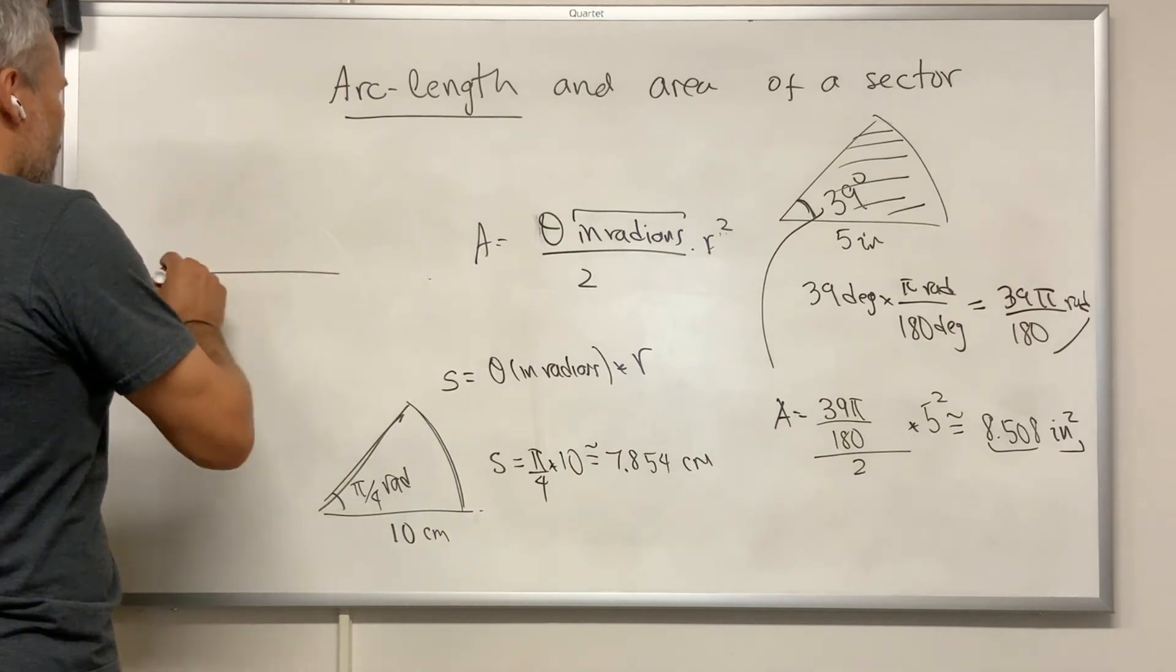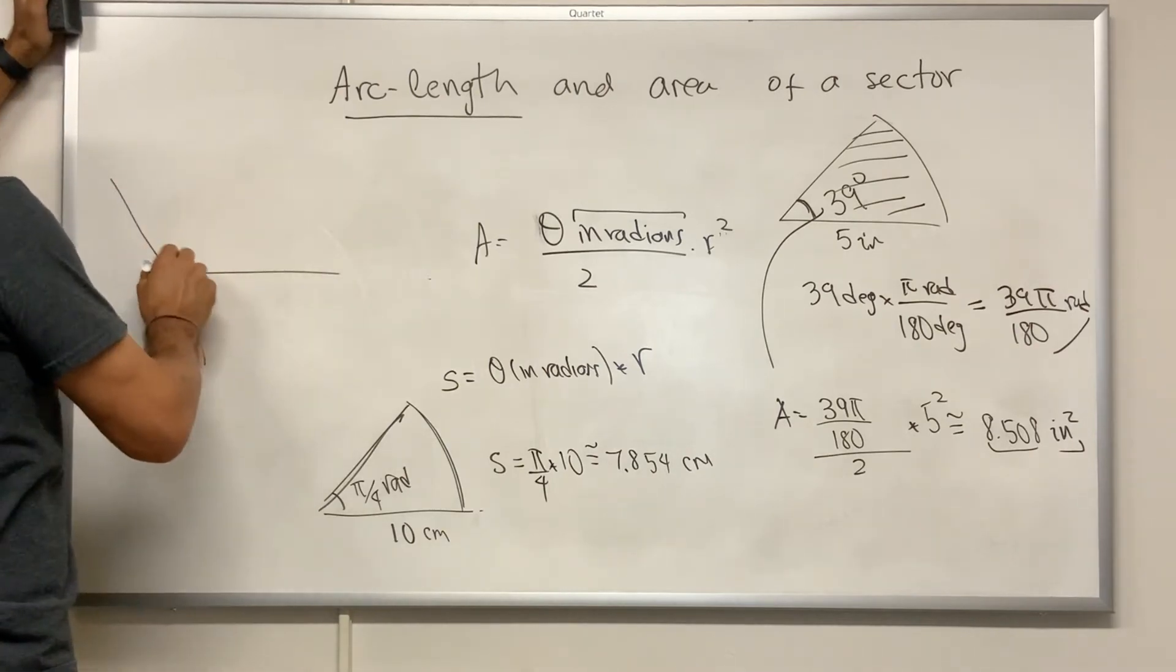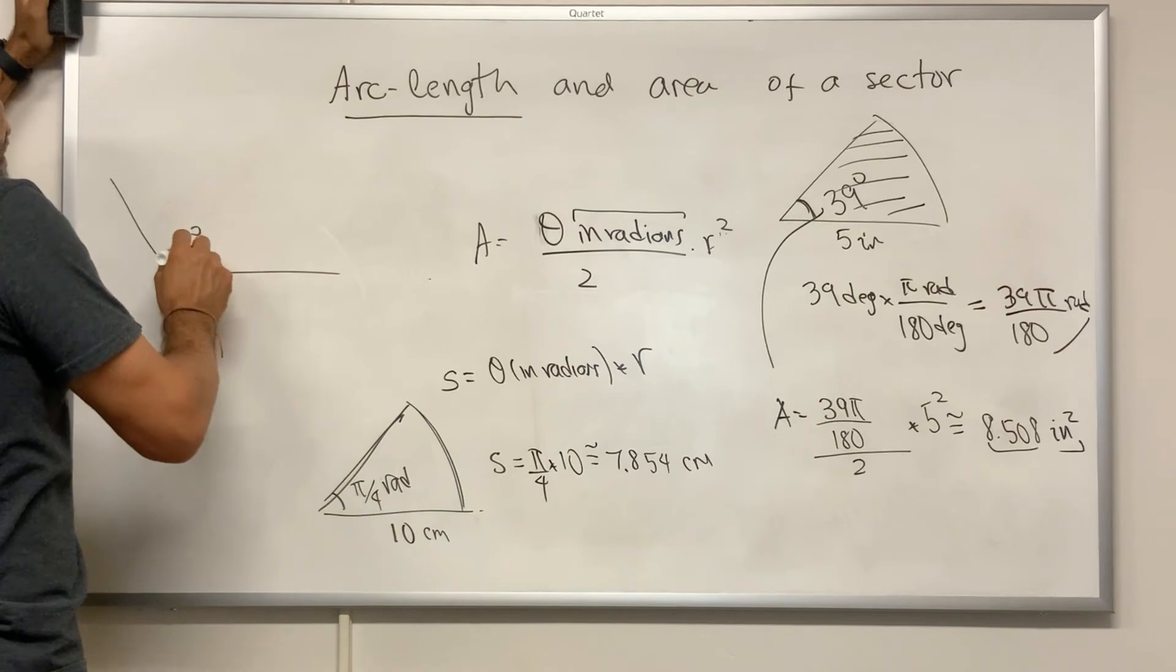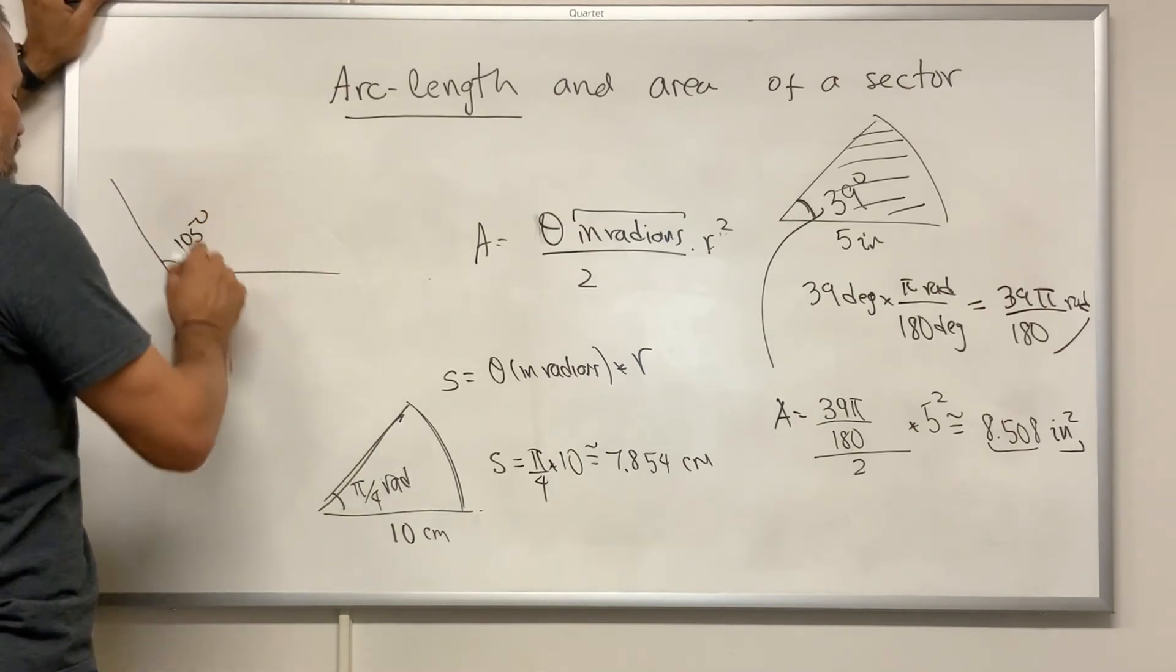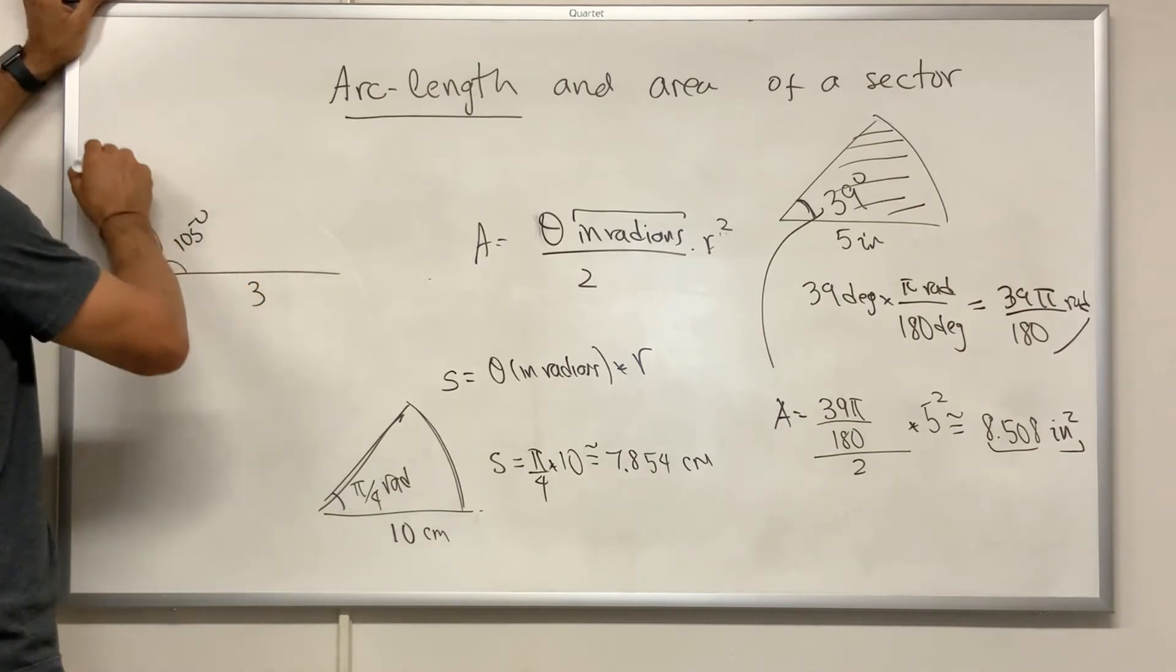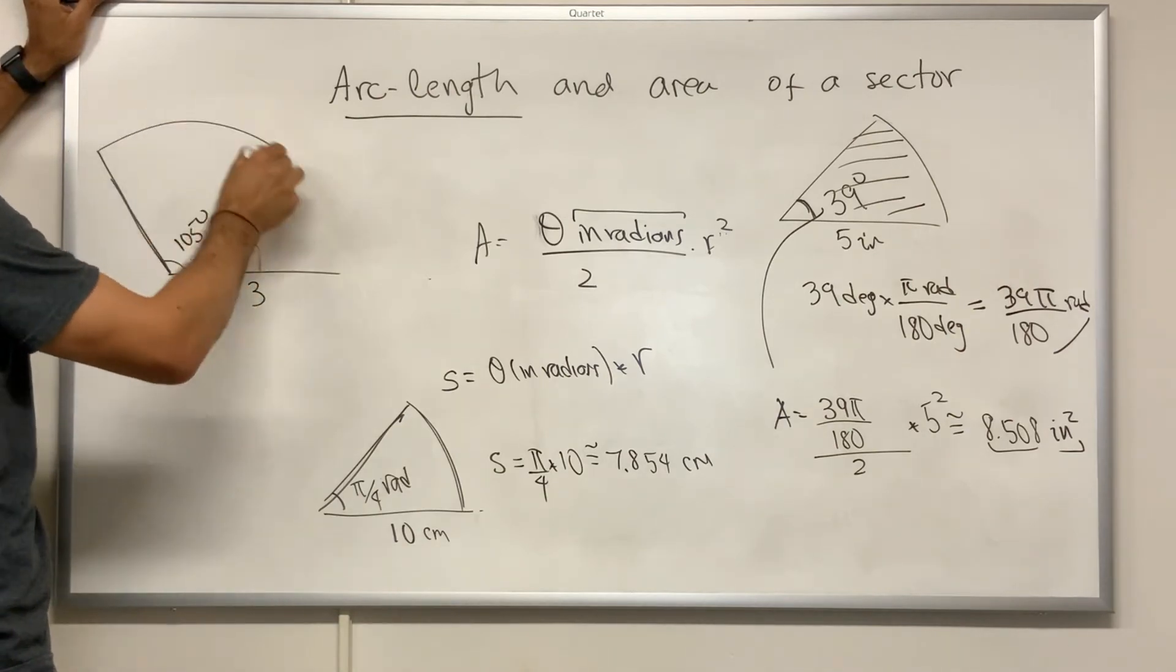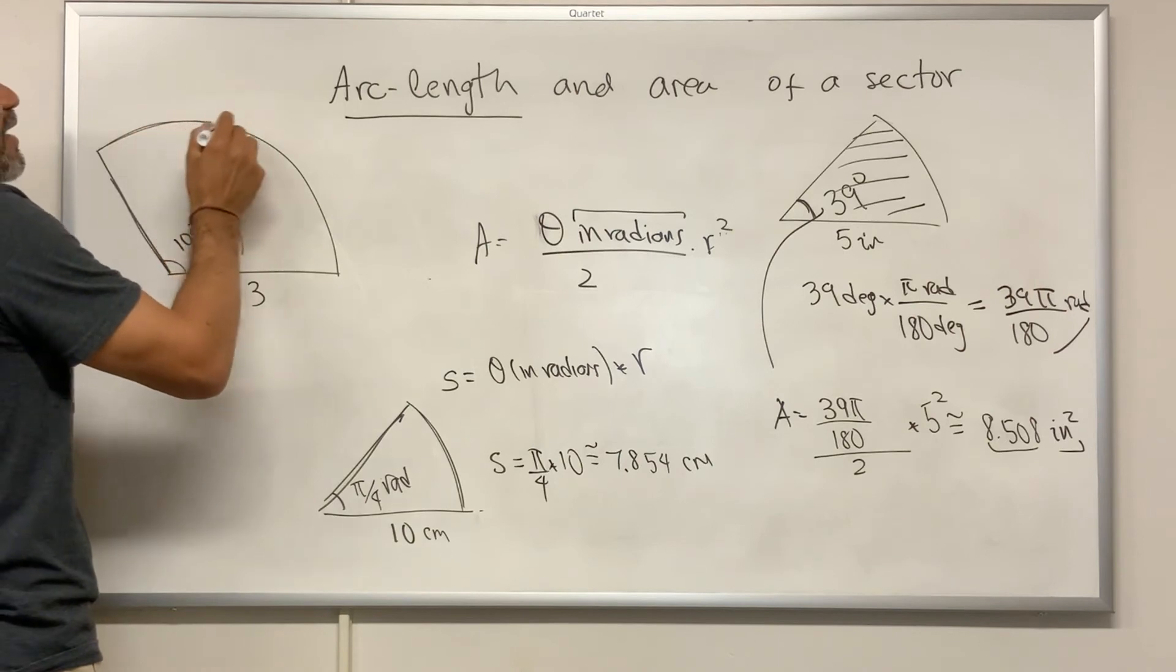If you have an angle of 105 degrees and a radius of 3, and you are wondering about this length, this arc length,